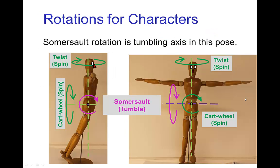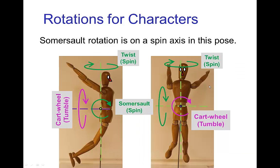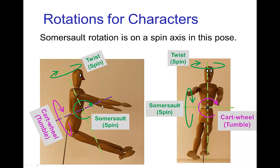For characters, we have something similar. So in a T-pose like this, the somersault axis is actually unstable. We might start rotating in a somersault in this pose, but it is unstable and the rotation will start to become irregular. The axes which are stable in this pose are the cartwheel axis and the twisting axis. On the other hand, by changing the pose, the stability of the axes will change. So in this pose, the somersault axis is stable and it's the cartwheel axis which is unstable. Here's another pose which also has a stable somersault axis, and again in this one, the cartwheel axis is unstable.